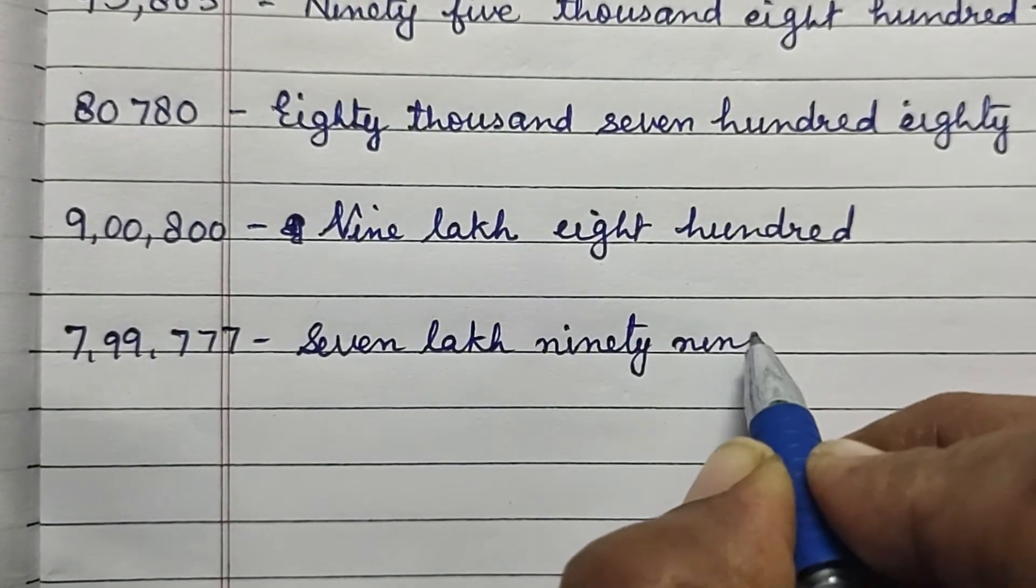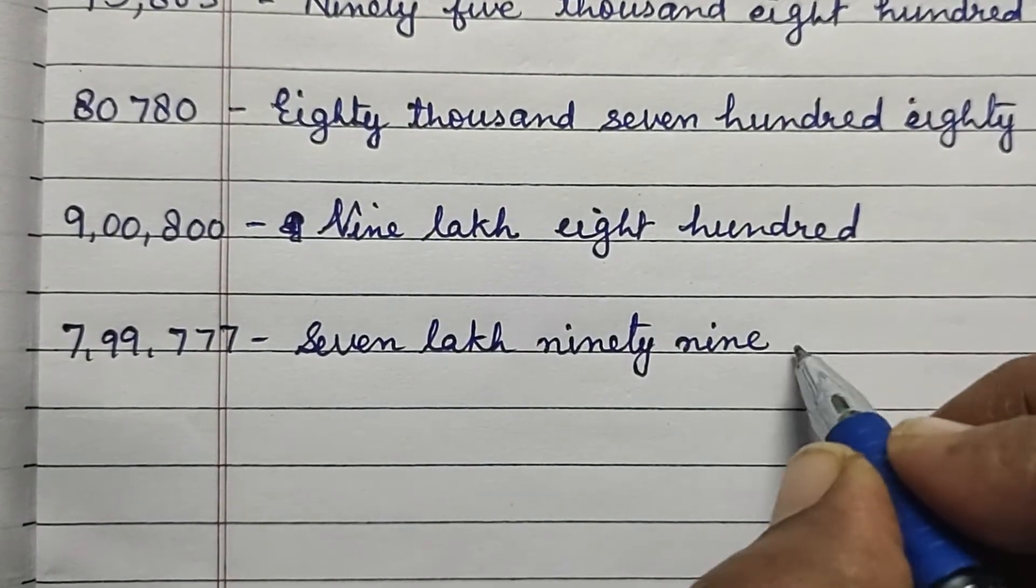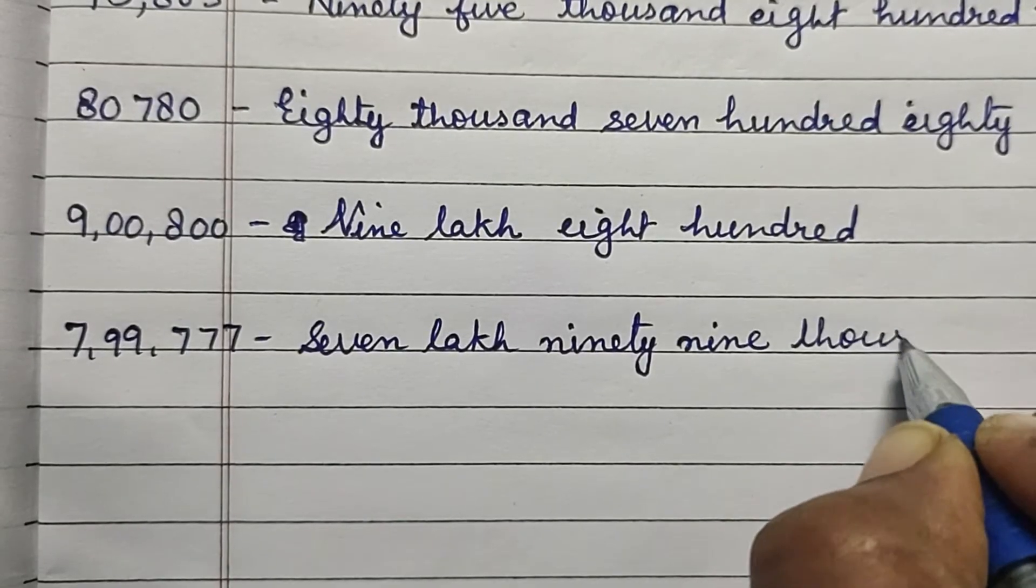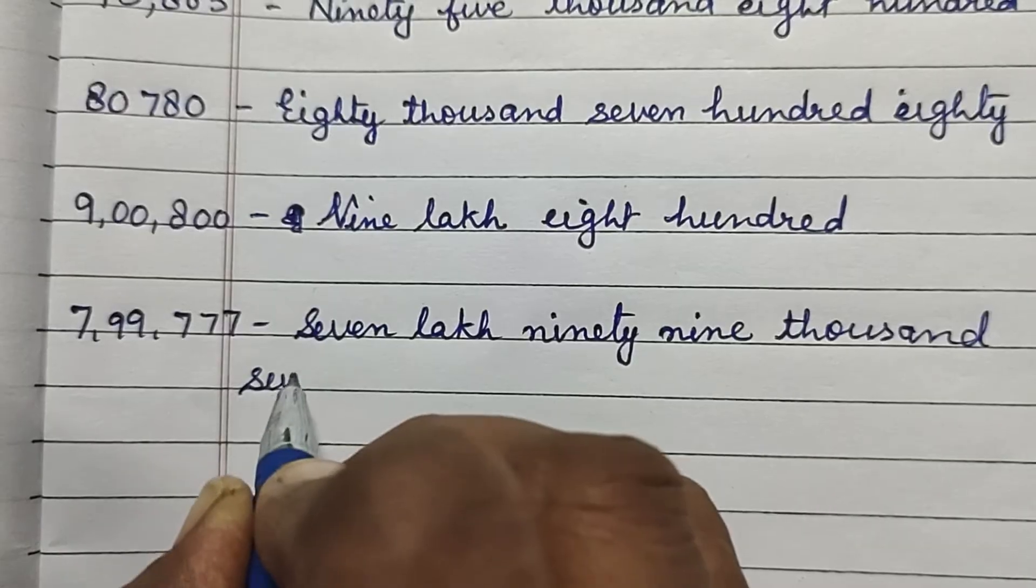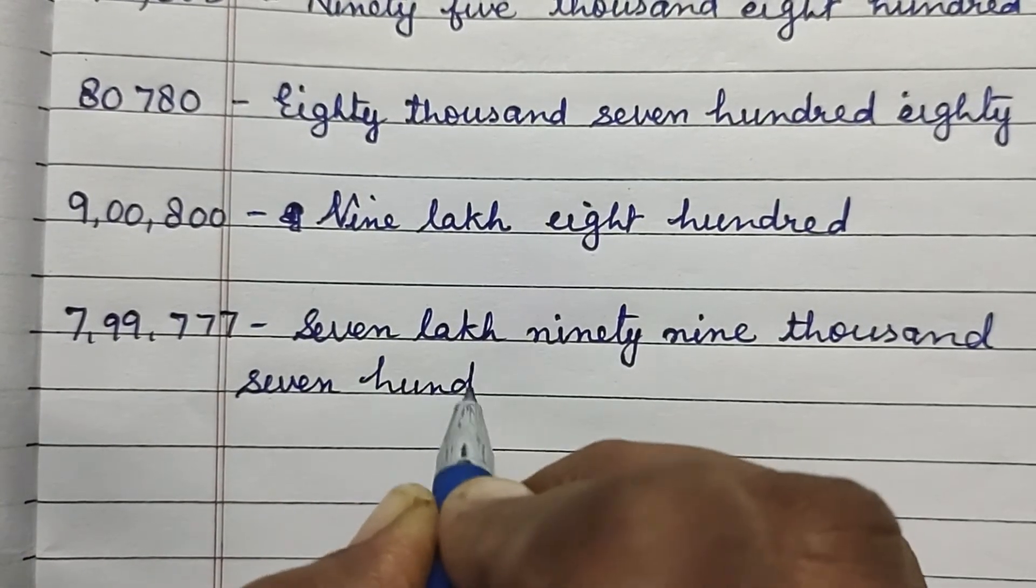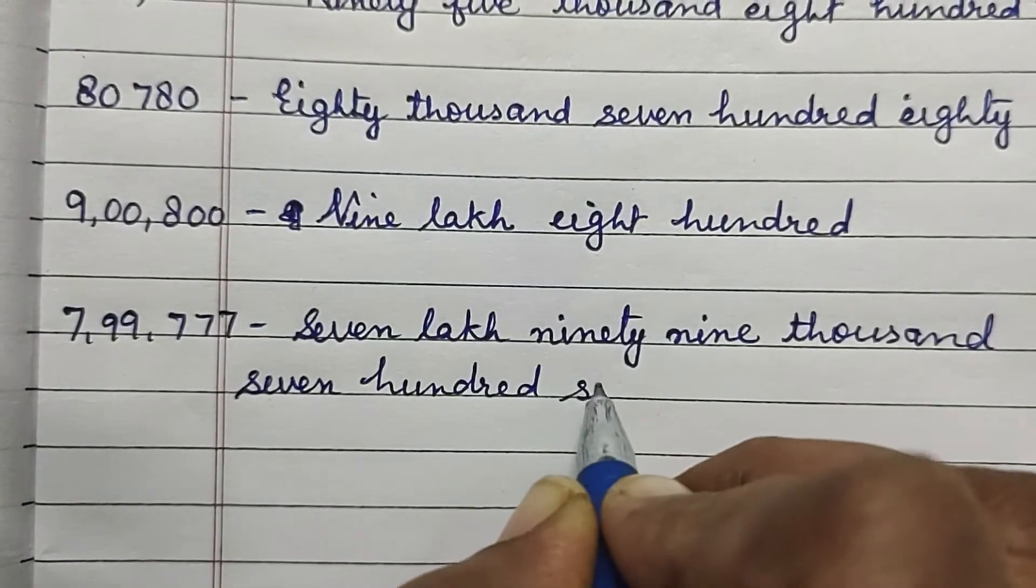Next one is 7,99,777. So seven lakh ninety-nine thousand seven hundred seventy-seven.